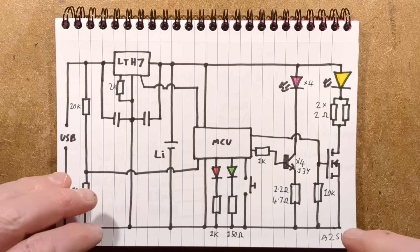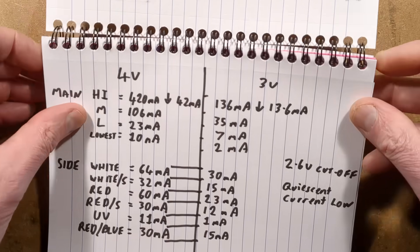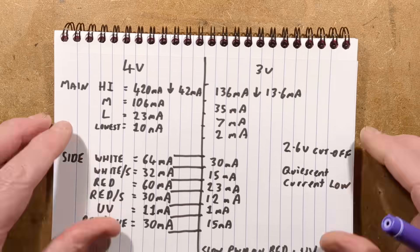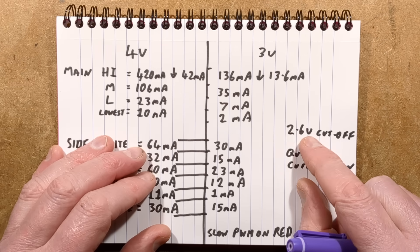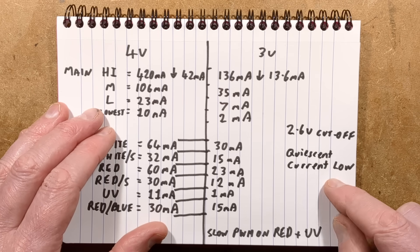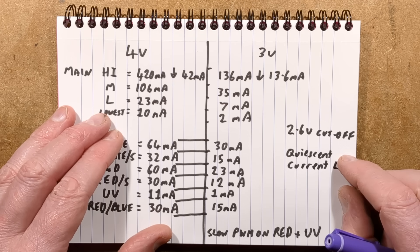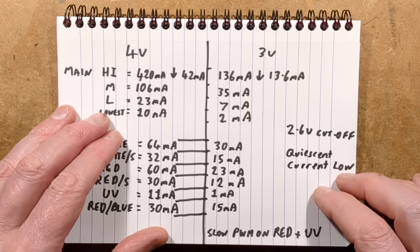I tested it at 4 volts, I tested it at 3 volts, I tested it right down to 2.6 volts which is the point cut off. The quiescent current in standby when it's off, I couldn't even measure it. It wouldn't show up in the 2000 microamp range, nothing showed up. That's good.